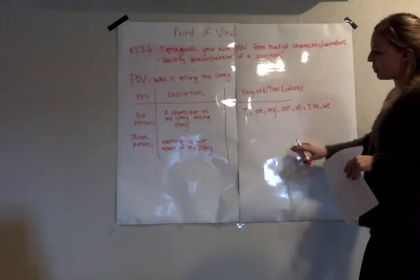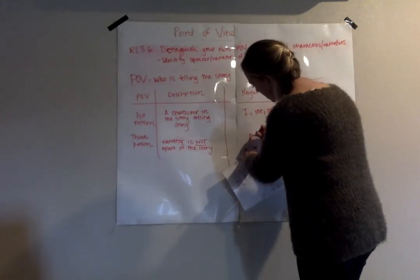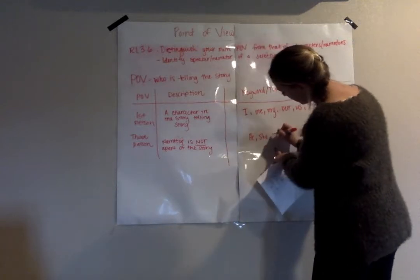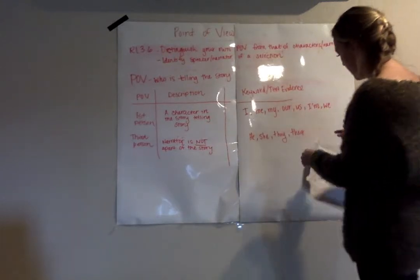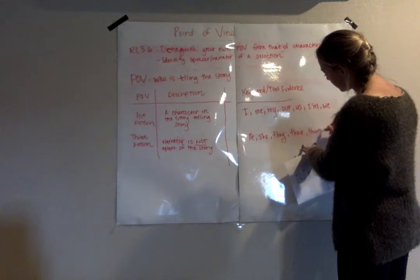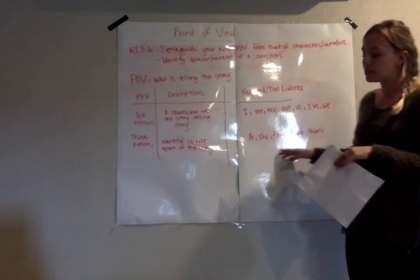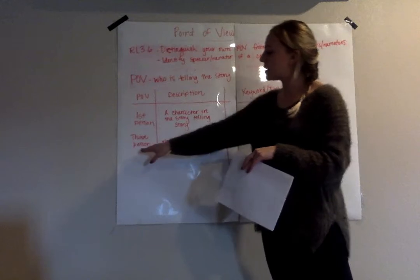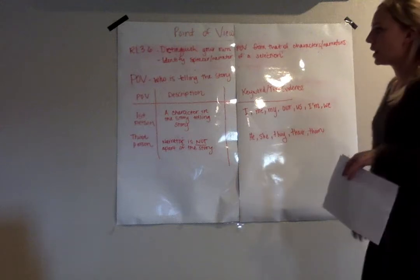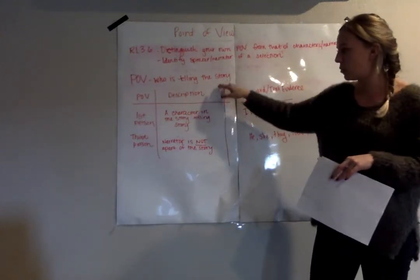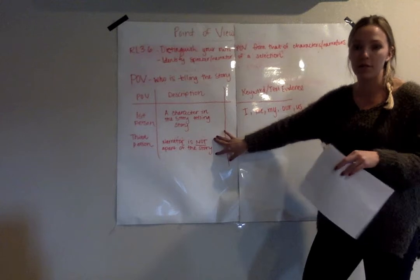Some key words and text evidence that will help us identify the third person in any of our stories: he, she, they, their, them. Anytime that we see any of these key words — and you might see some other ones that I didn't list as well — that's going to be a good indicator that we are reading a story written in the third person point of view. So again, point of view is who is telling the story. We either have a character in the story telling it, or we've got a narrator who is not a part of the story.